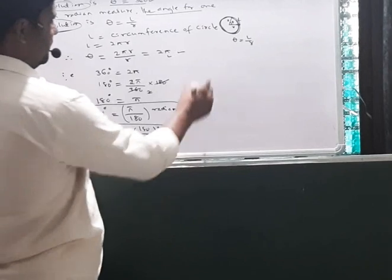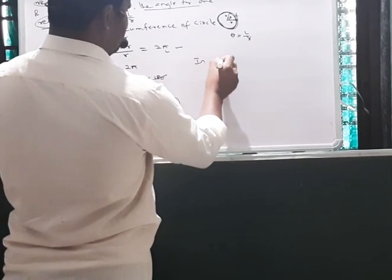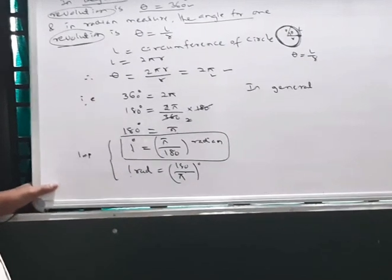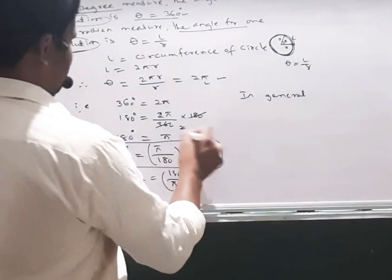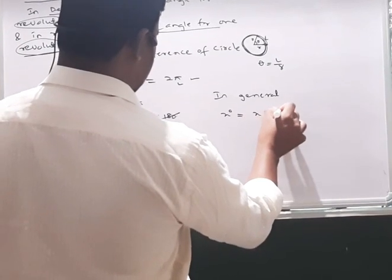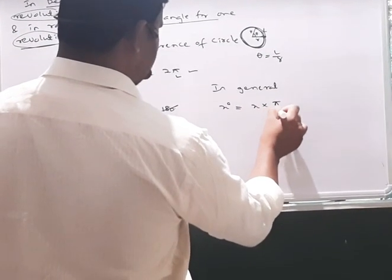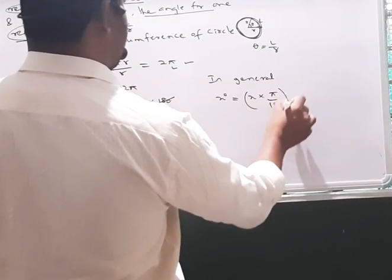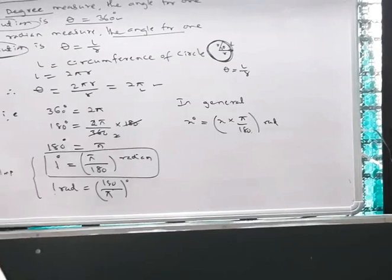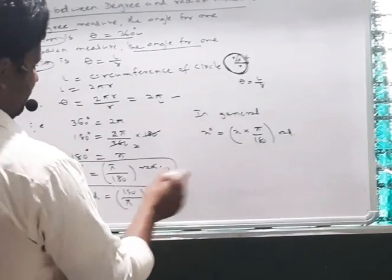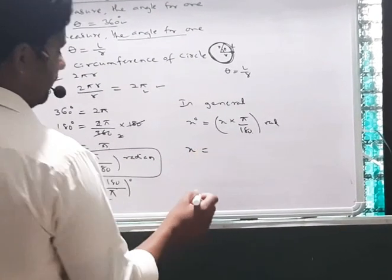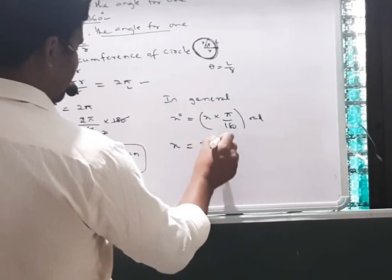In general, if you want to convert x degrees to radians, then x degrees equals x multiplied by π/180 radians — because 1 degree is π/180 radian. Similarly, x radians equals x multiplied by 180/π degrees.